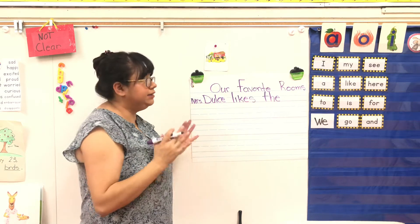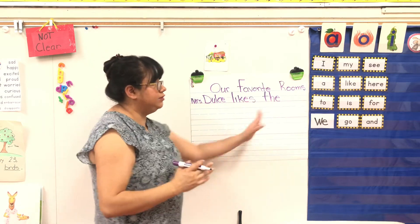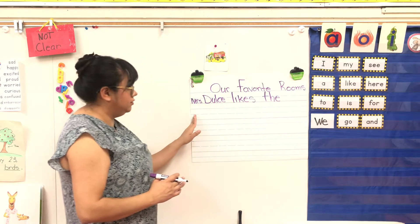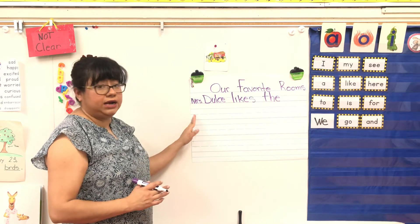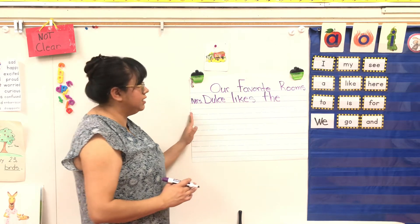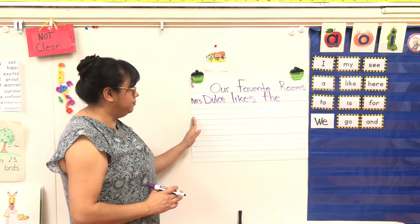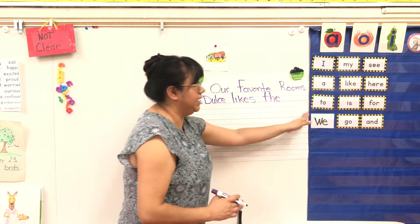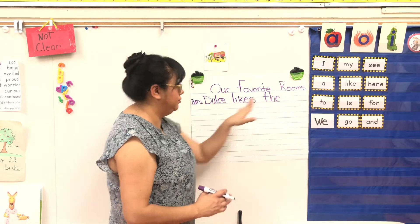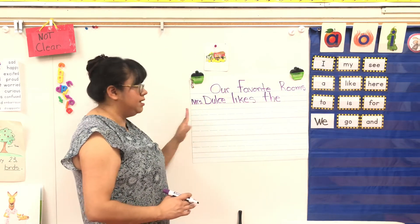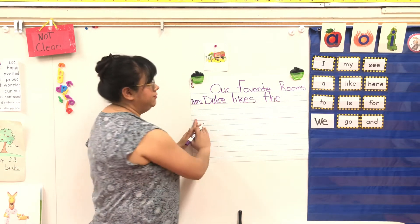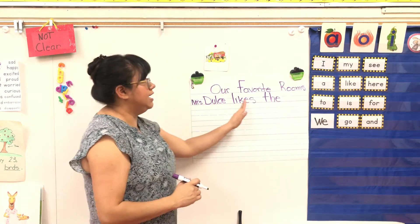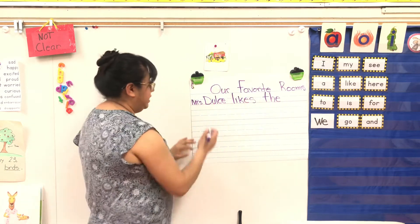What do I do? I don't have any more room. So I'm going to go down here. And remember we start from top to bottom, left to right. So I'm going to go from the top to the bottom, from the left to the right. Miss Dulce likes the kitchen.